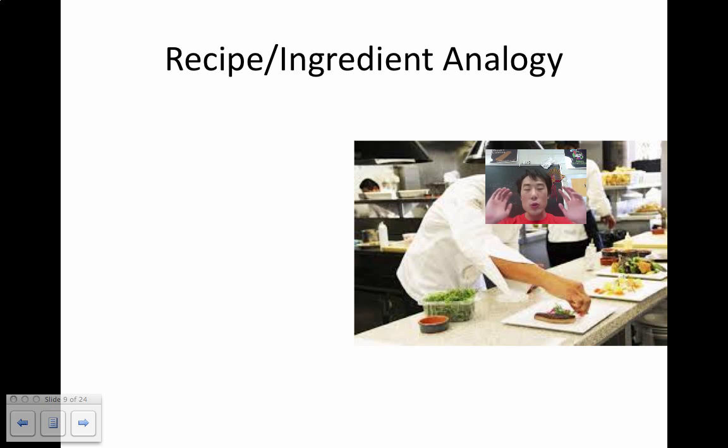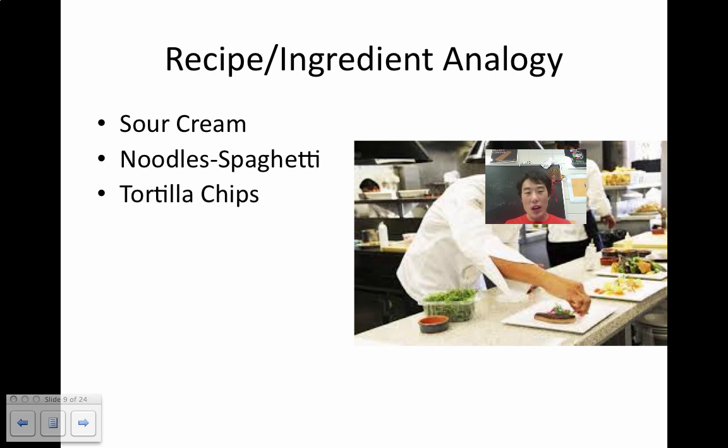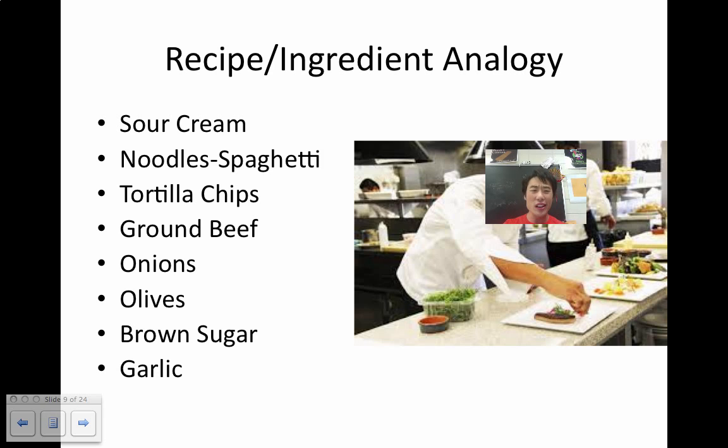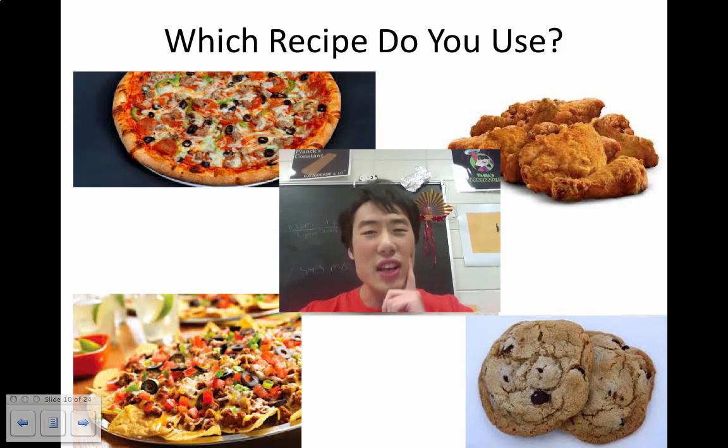Now the easiest way to pick or choose the right equation is what I like to call the recipe ingredient analogy. If you are given the following ingredients, think about what recipe you could use to feed your hungry stomachs. Sour cream, noodles, spaghetti, tortilla chips, ground beef, onions, olives, brown sugar, garlic, cheese. You know, the yellow kind. Let's take a look.